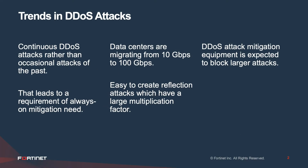Before we get into the actual mitigation, it's important to understand the trends in DDoS attacks. These days there are more continuous attacks rather than occasional attacks as in the past, leading to a requirement for always-on mitigation. Simultaneously, data centers are migrating from 10 Gbps links to 200 Gbps links. On the attacker side, it's easier to create reflection attacks with a large multiplication factor, meaning a small starting attack can create a much larger impactful attack. Therefore, DDoS mitigation equipment is expected to block larger attacks.